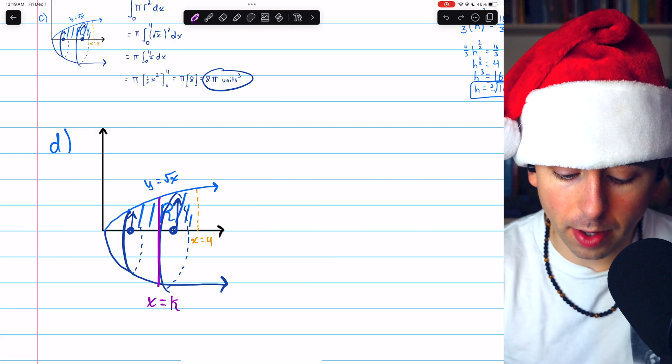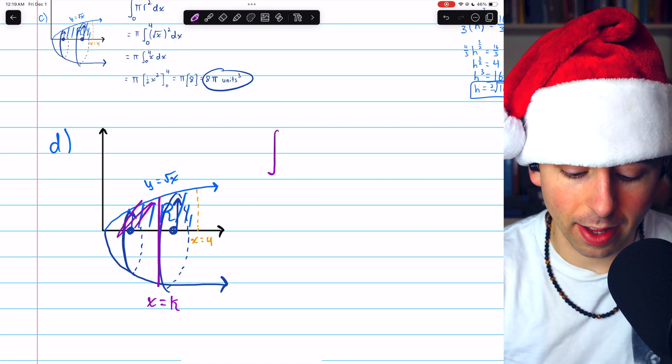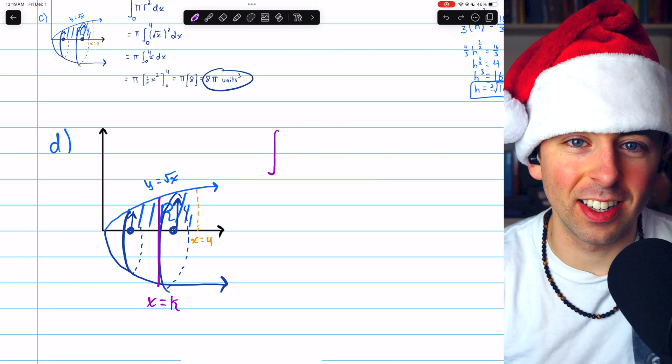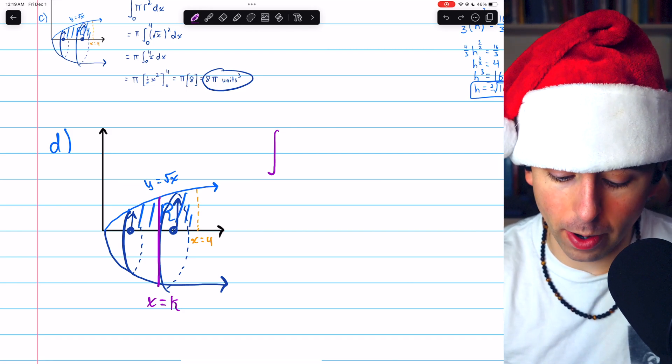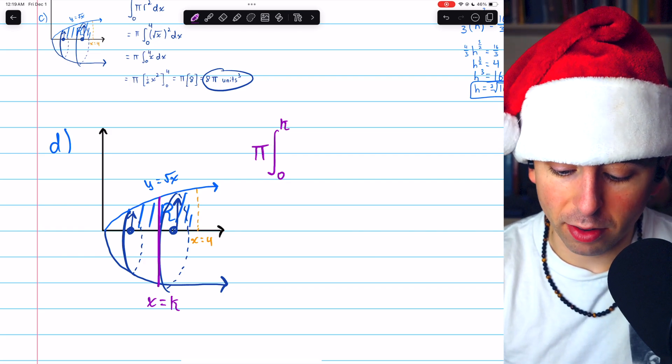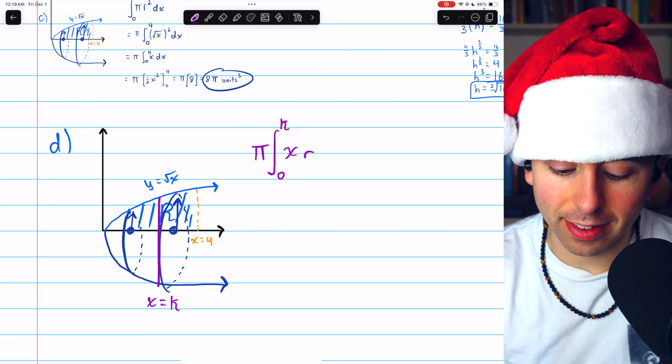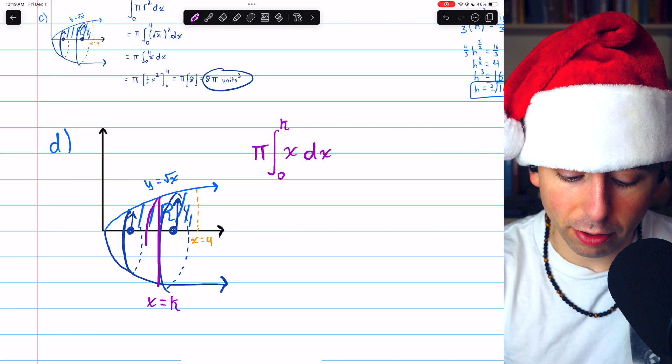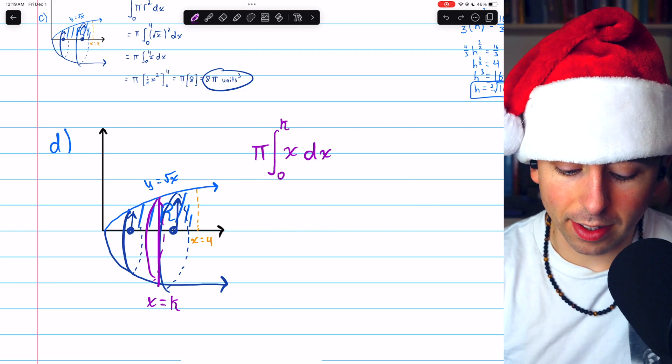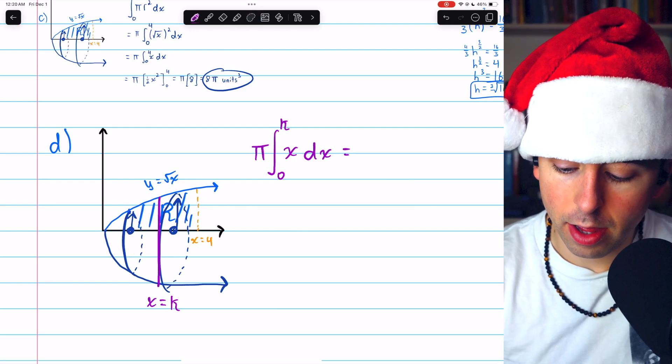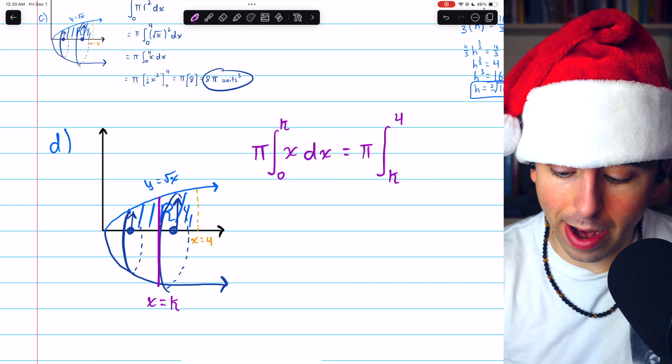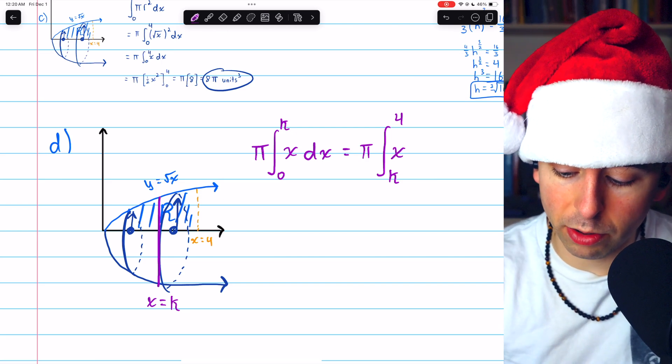Now the volume of the solid to the left of X equals K, which perhaps I should have drawn as a curve to more accurately be consistent with the 3D sketch. But regardless, we're integrating from 0 to K. And we can take the pi out. The radius squared we know is just X dx. So that's going to be the volume of this part of the solid that's to the left of the vertical line X equals K. And this is going to equal pi multiplied by the integral from K to 4 of the radius squared. The radius, again, is just root X. So when we square that, we get X.